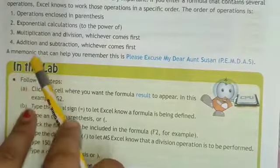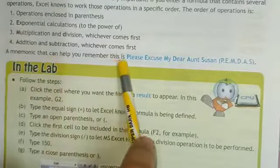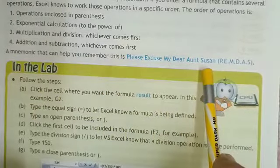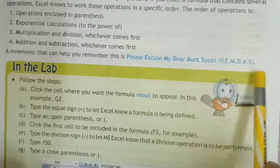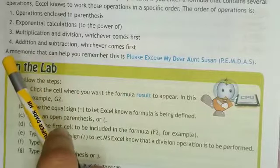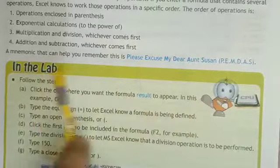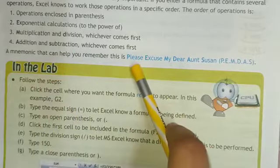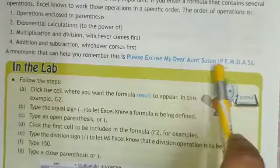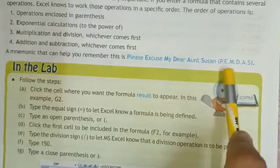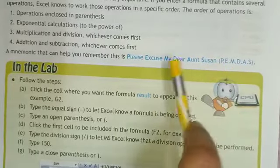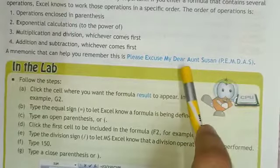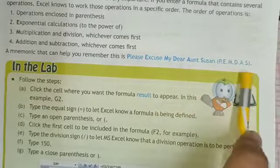A mnemonic that can help you remember this order is: Please Excuse My Dear Aunt Susie — PEMDAS. Here, P is for Parentheses, E for Exponential, M for Multiplication, D for Division, A for Addition, and S for Subtraction.